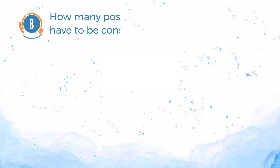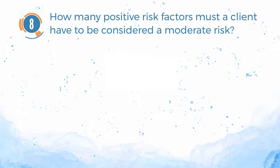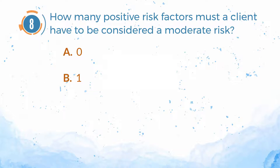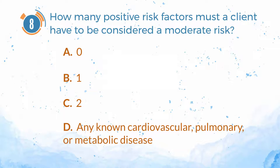Number 8. How many positive risk factors must a client have to be considered a moderate risk? A. Zero. B. One. C. Two. D. Any known cardiovascular, pulmonary, or metabolic disease.